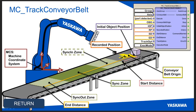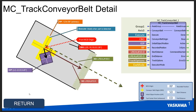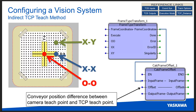So between frame type transform — to get the intermediate origin point — and calc frame offset — to complete the offset back to the actual conveyor belt origin — those two function blocks combined allow you to teach the conveyor belt origin from the MCS actual position in any orientation configuration.